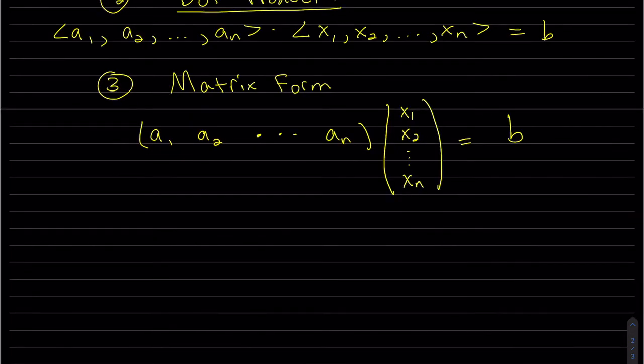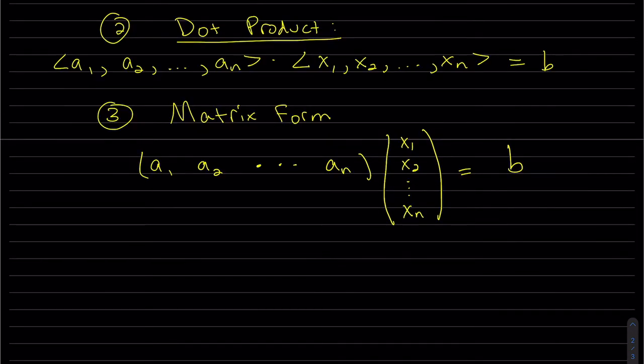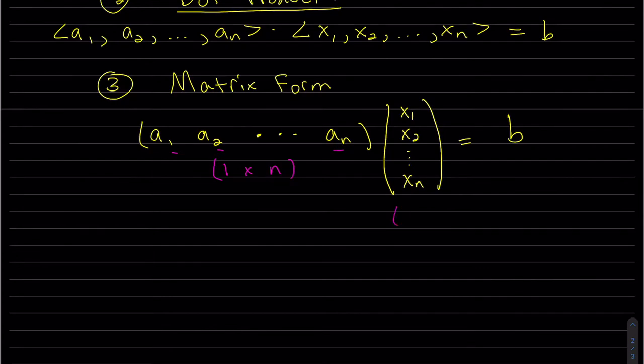This is a row vector, which is one row by n elements. It goes all the way to n: one, two, to n. And this is a column matrix. There are n rows times one column. And when we multiply these two matrices, we get a one by one vector, which is just a constant.